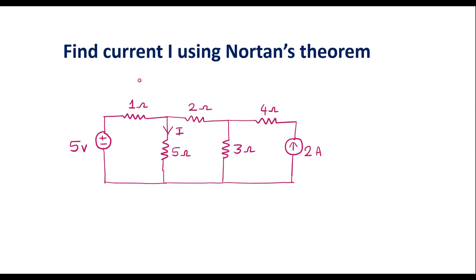In this video, I will consider one numerical on Norton's theorem. Find current I using Norton's theorem. This is the given circuit; we are supposed to find current I which is flowing through the 5 ohm resistor using Norton's theorem.